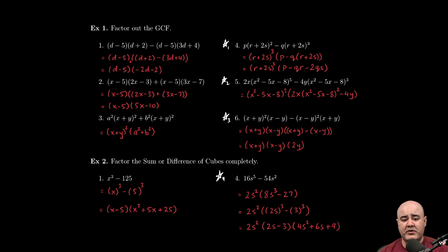Immediately after you write the GCF, you open parentheses. Now, how do you know what goes inside? You divide each term by the GCF. So if I divide (d - 5) times (d + 2) by (d - 5), I'm going to be left over with (d + 2) as the quotient. That goes here. Minus, now if we divide this term by the GCF, (d - 5), (d - 5) times (3d + 4) divided by (d - 5) will give us (3d + 4). So that goes here.